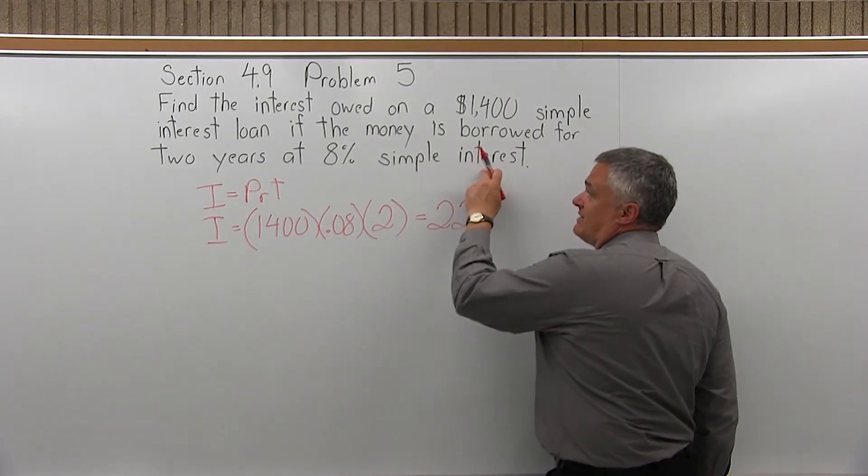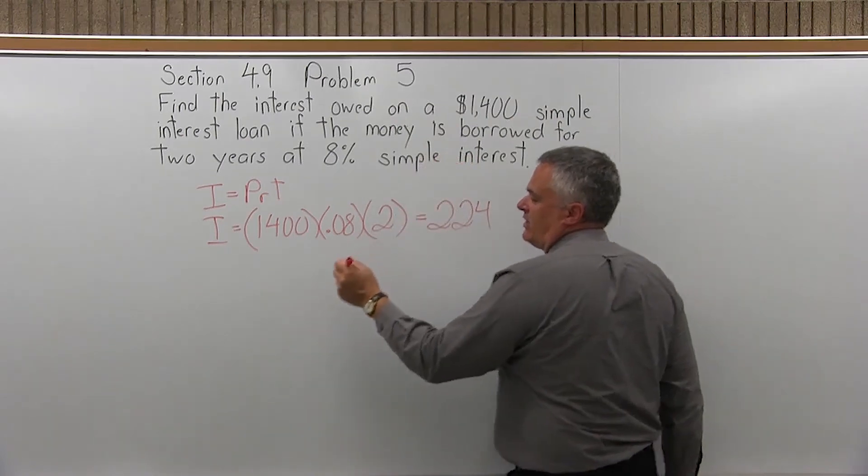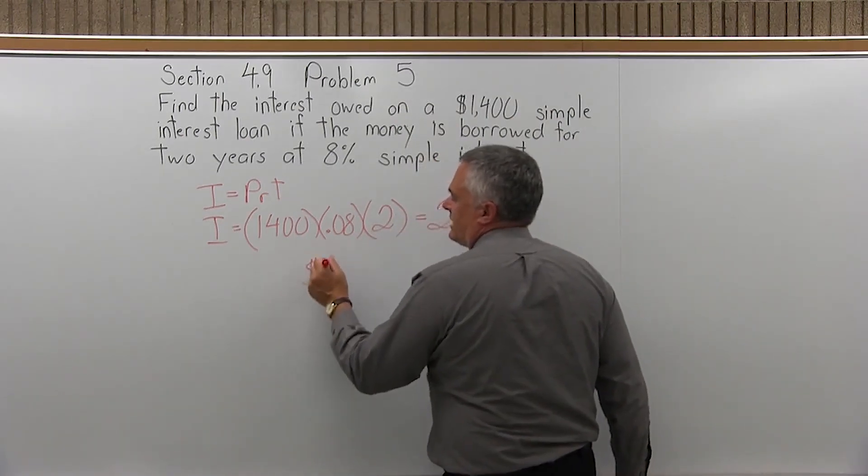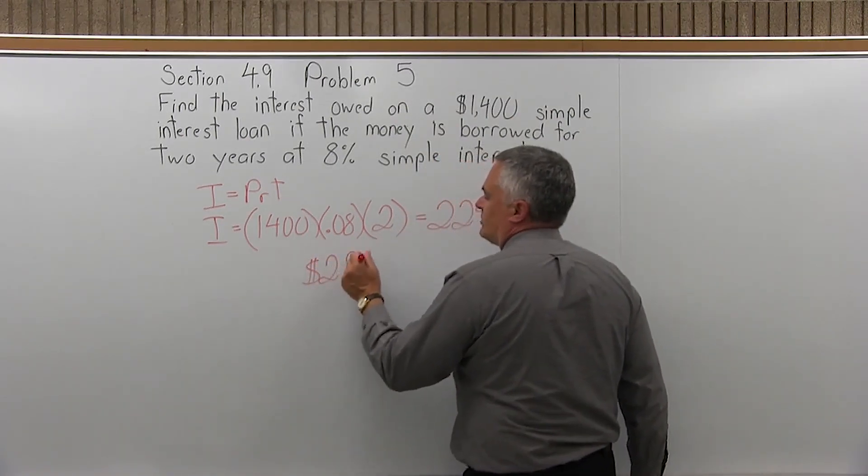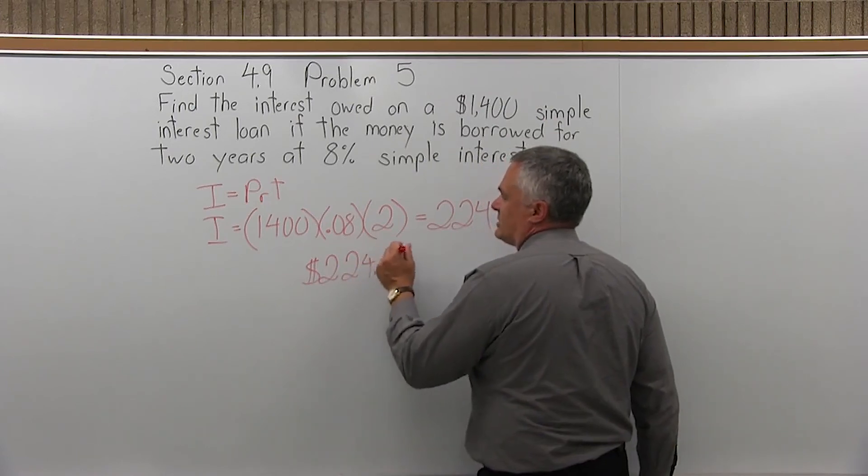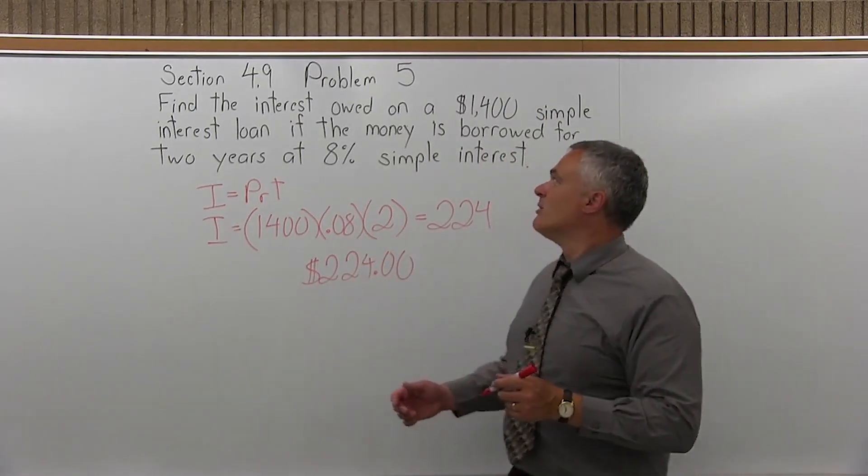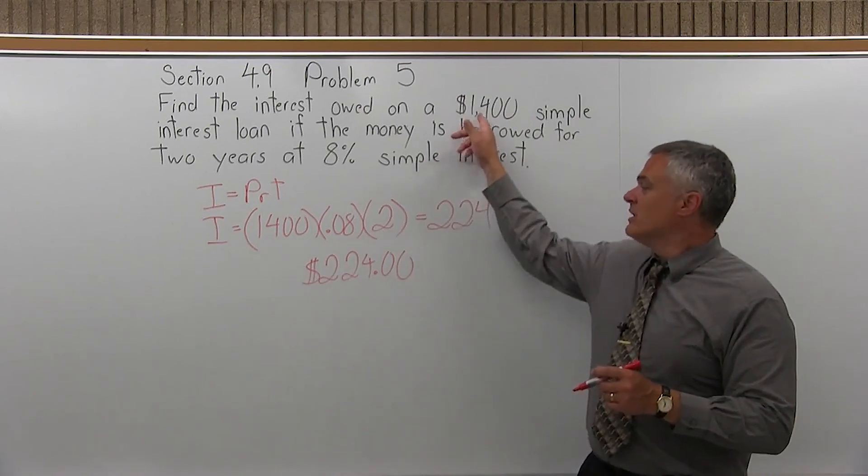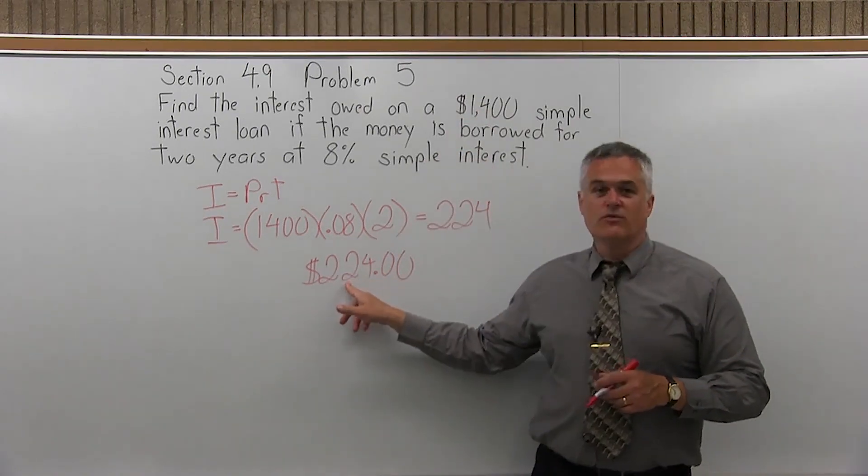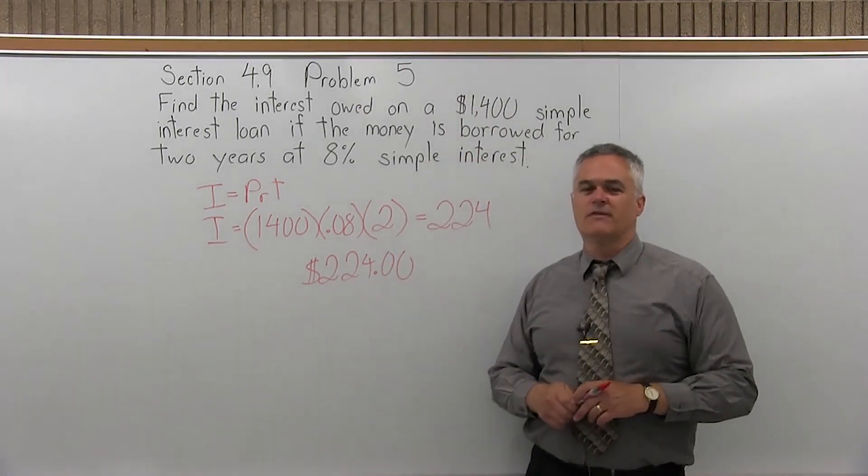That's the answer. So that's the amount of interest that's owed on that loan. So to do a nice job, we'll put a dollar symbol, $224 and no cents. So whoever the borrower is will have to pay the lender back the 1,400 plus an extra $224 for the convenience of having a loan.